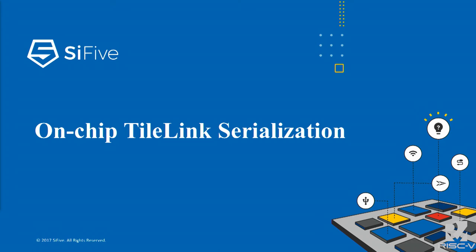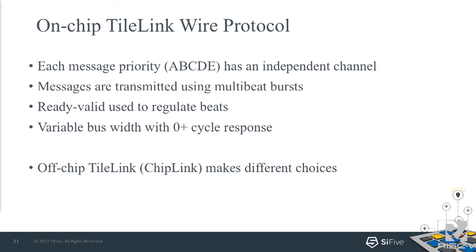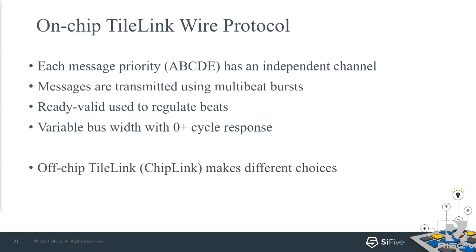So for on-chip serialization of TileLink: we have one serialization we use on-chip for most of RocketChip and most of our chips. Every message priority has an independent channel in this serialization, but the actual payload they carry can be very different — like the E-channel is just 'I got your message, here's the number it had,' so these channels are very different in size. Messages are transmitted with multiple beats if you're using TL-UH, and we use ready-valid to negotiate when the beats are transmitted. Ready-valid would be an inappropriate signaling mechanism when you have higher latency between participants. The bus width is variable, and you can have the response come back on the same cycle or any later number of cycles.